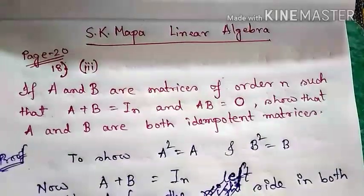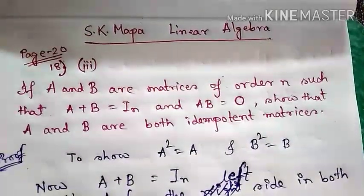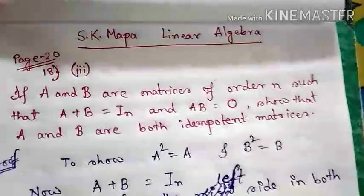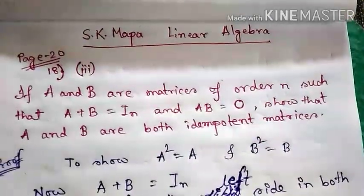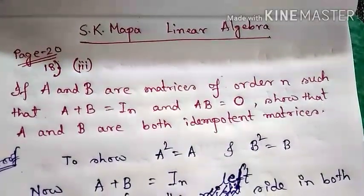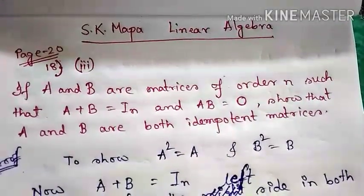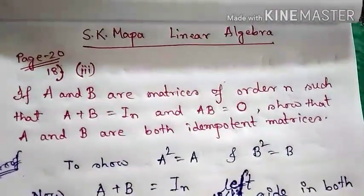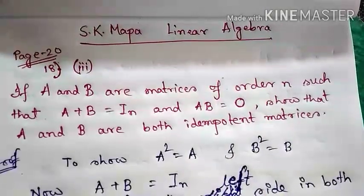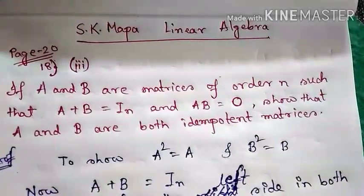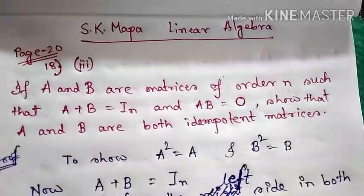This is problem number 18, sub-question 3. The problem says: If A and B are matrices of order n such that A+B equals In (the identity matrix of order n) and AB equals the zero matrix, show that A and B are both idempotent matrices.